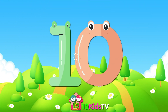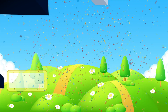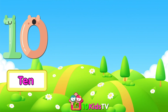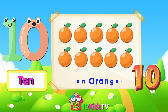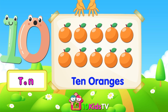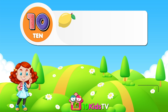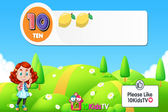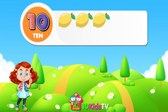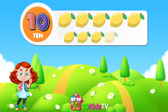Next number is ten. Ten. Number ten. Ten oranges. Example of the number ten. 1 lemon, 2 lemons, 3 lemons, 4 lemons, 5 lemons, 6 lemons, 7 lemons, 8 lemons, 9 lemons, 10 lemons.